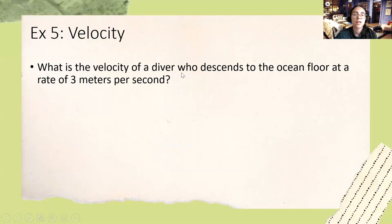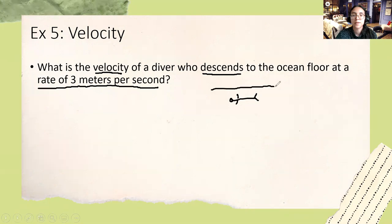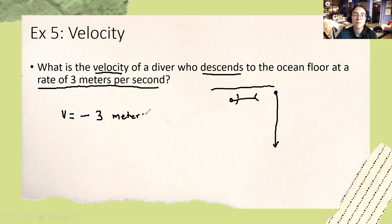We're asked to find the velocity of a diver who descends to the ocean floor at a rate of seven meters per second. I'll underline 'velocity,' 'descends,' and 'seven meters per second.' The diver is going down to the ocean floor, so the velocity is going to be negative seven meters per second.